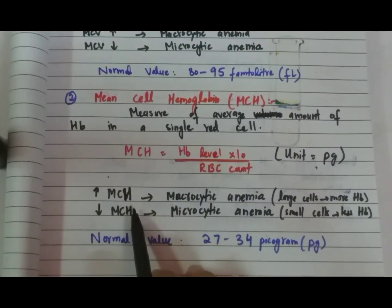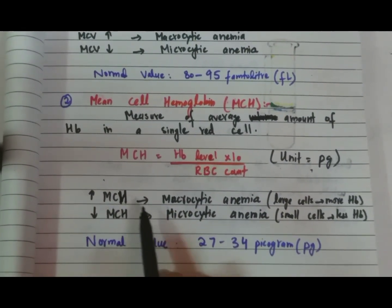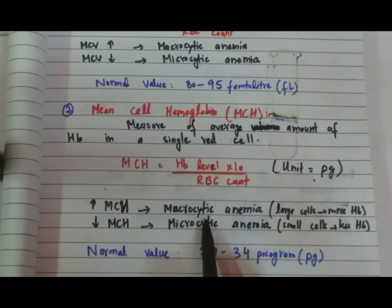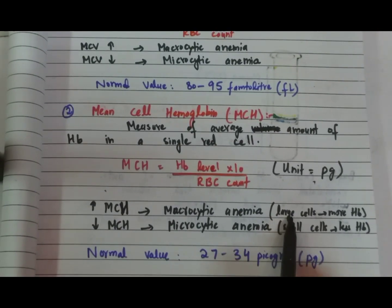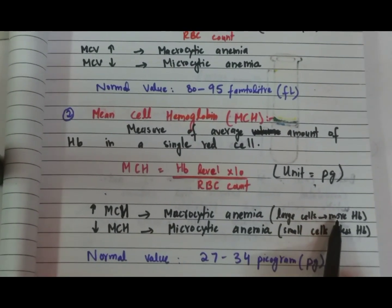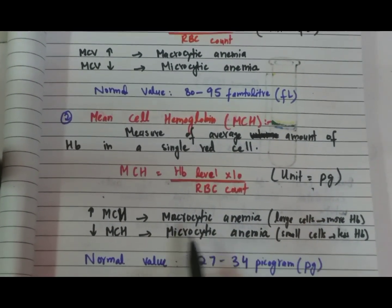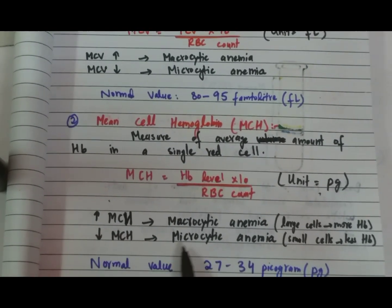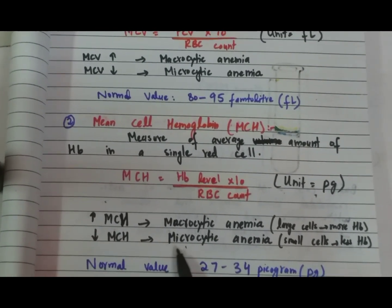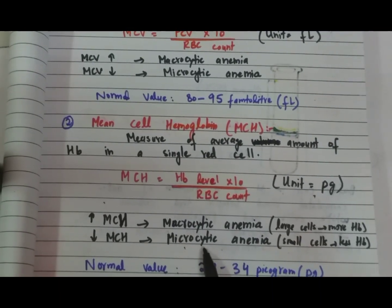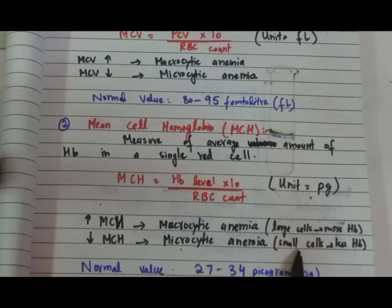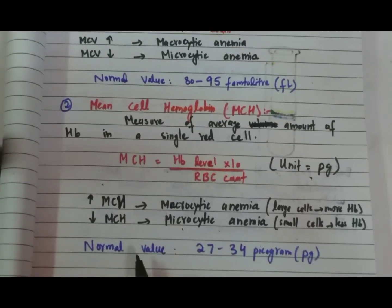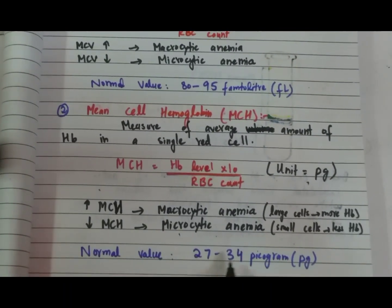In macrocytic anemia, the mean cell hemoglobin will be more, because the cell size of RBCs is larger and the hemoglobin content is larger, so mean cell hemoglobin increases. In microcytic anemia, the cell size is small, so mean cell hemoglobin decreases. The normal value is 27 to 34 picograms.